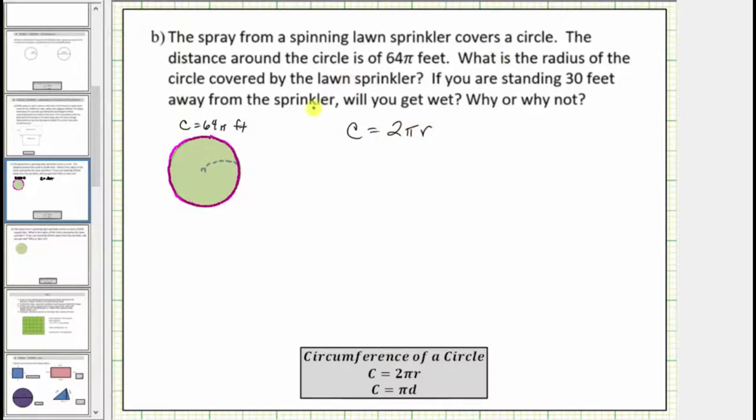Because we know the circumference is equal to 64π feet, we substitute 64π feet for C, giving us the equation 64π feet equals 2πr. And now we need to solve this equation for r.